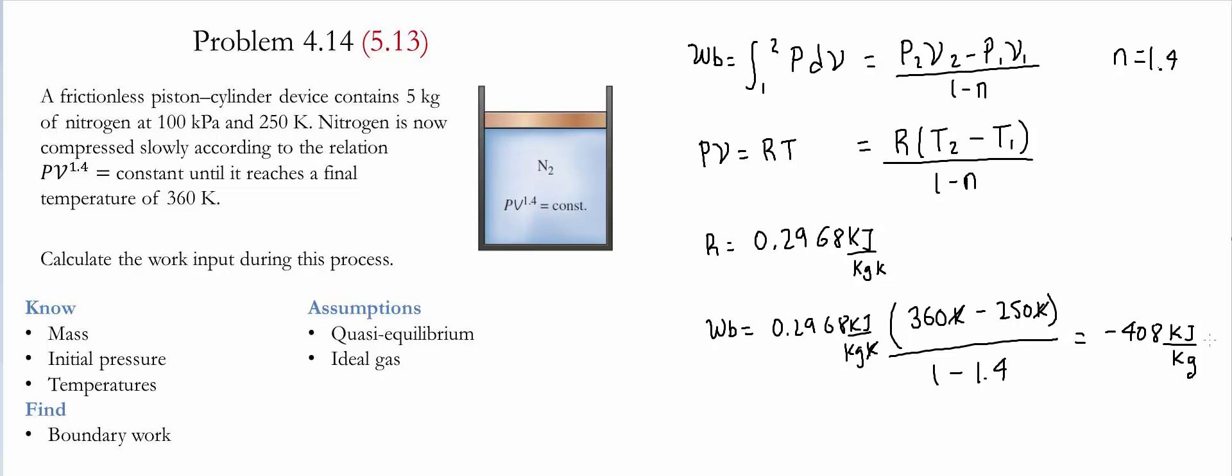The fact that the value of the boundary work is negative means that the work is done on the system. It also indicates that the system is being compressed. If we represent this in a PV diagram, we'll start at state 1, finish at state 2, and the curve will be as such based on the relationship given.